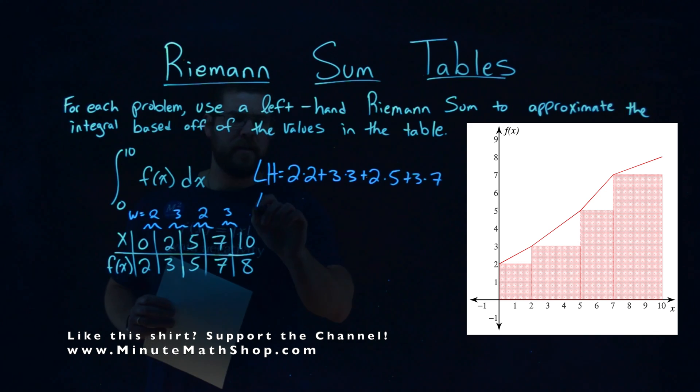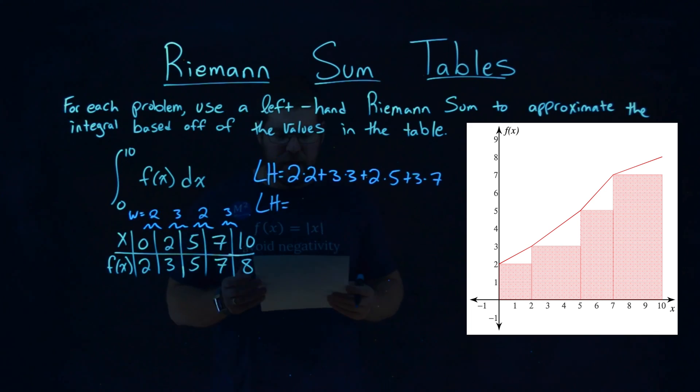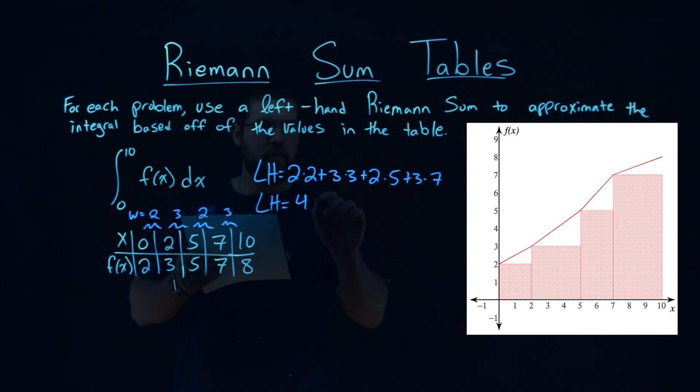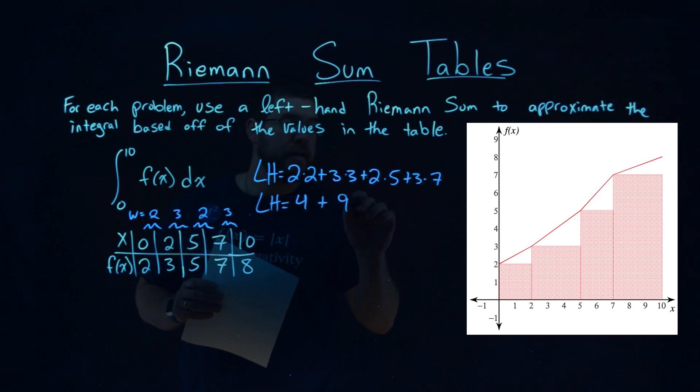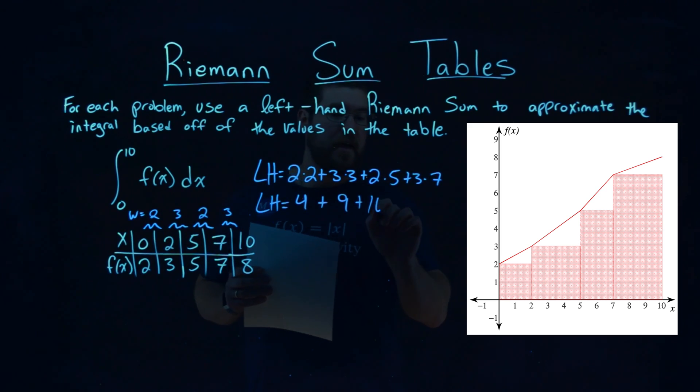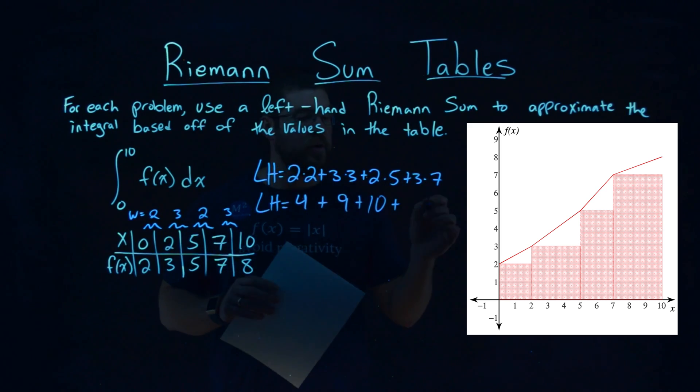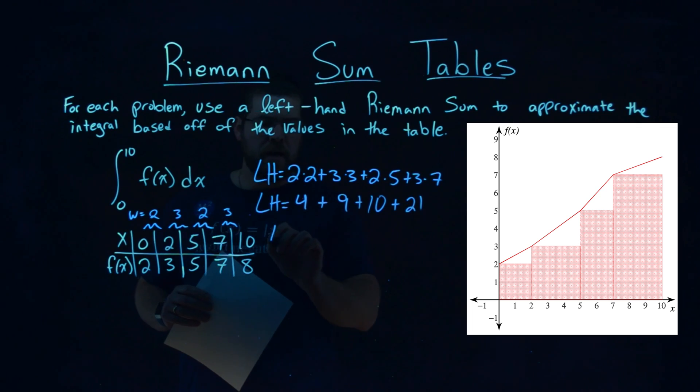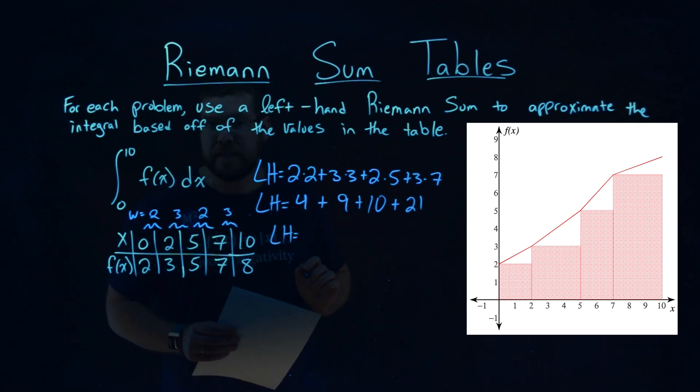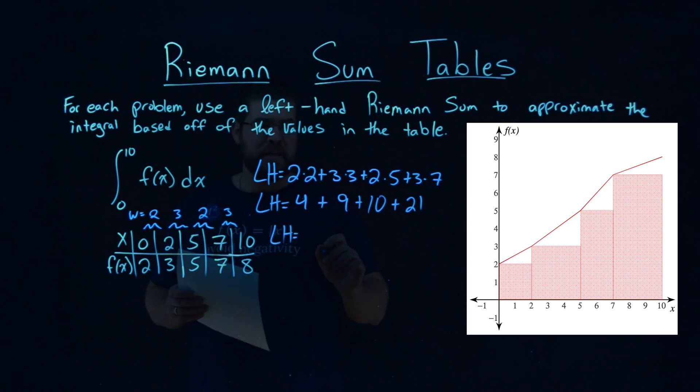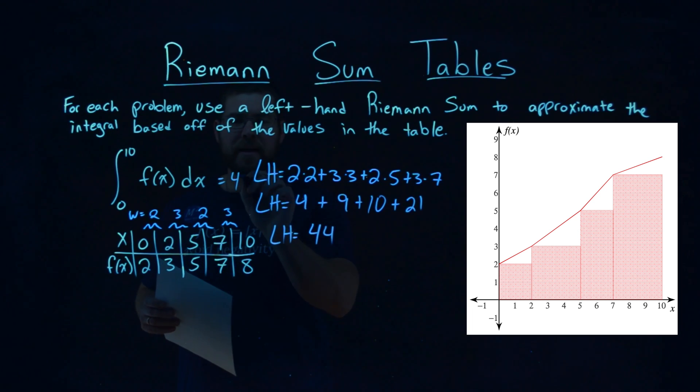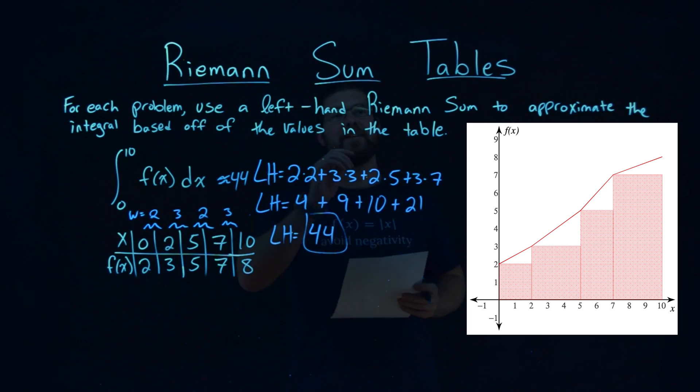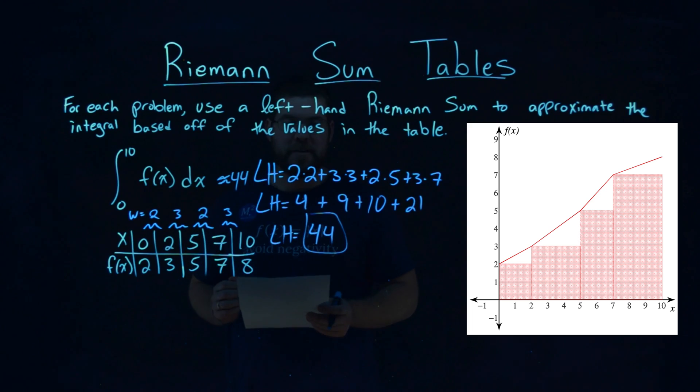And now we have to simplify this. The left-hand sum, we have 2 times 2 gives us 4, plus 3 times 3 is 9, plus 2 times 5 is 10, and 3 times 7 is 21. Now we want to add all of these together, and it comes out to be 44. And so 44 is the approximation using left-hand Riemann sum of our integral function here.